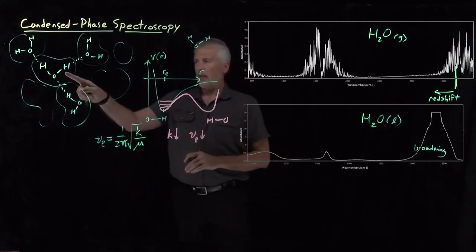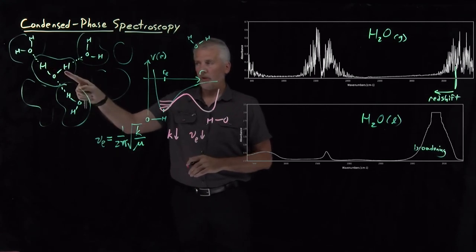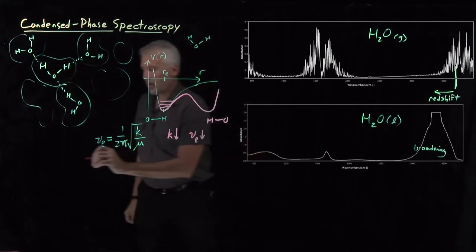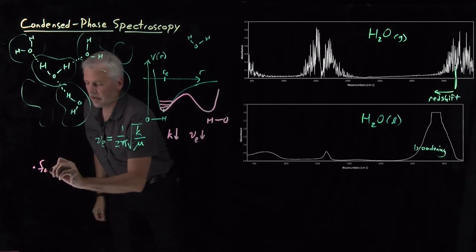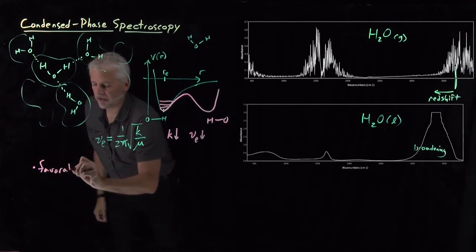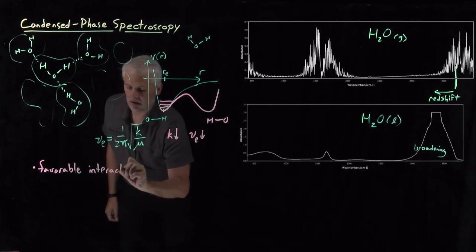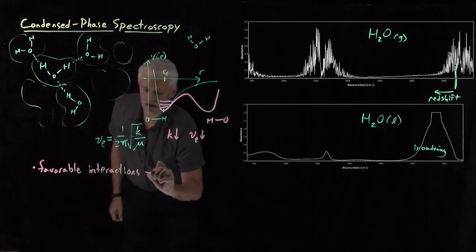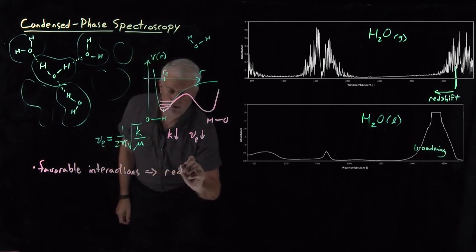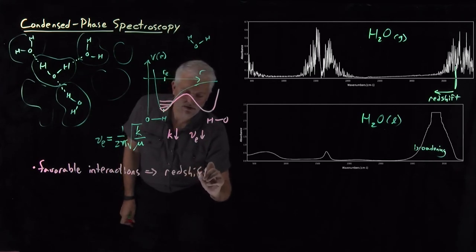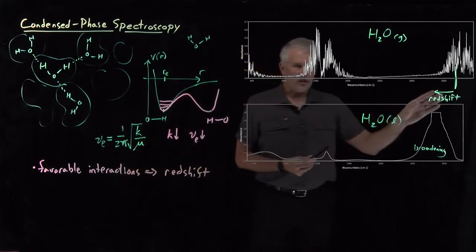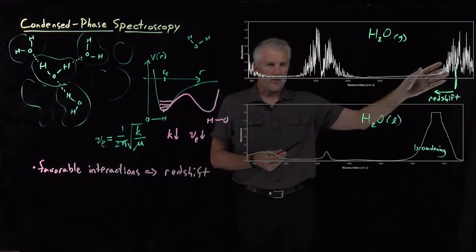When this water molecule is favorably interacting with another molecule, those favorable interactions, hydrogen bonding in particular, lead to a red shift in the condensed phase relative to the gas phase. That's exactly what we see happening for these water molecules. These absorption bands get red shifted down to lower frequencies in the liquid phase.